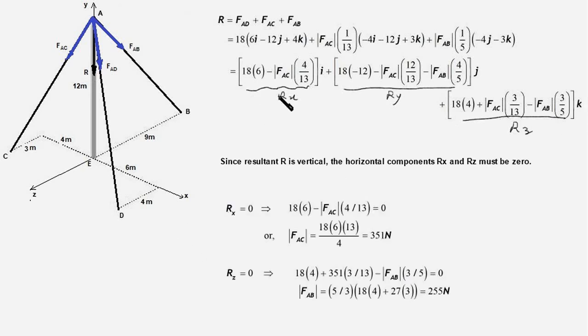So this coefficient we equate it to zero here, and that gives us F_AC equal to 351 Newtons. So that's our answer. And we equate this coefficient of k unit vector, that is R_z, to zero, and that gives us this expression. Note that we have already found F_AC equal to 351 Newtons and that is what we have plugged in in place of F_AC here. So there is only one unknown in this equation, and that is F_AB, and that works out to 255 Newtons. So this is the second answer.